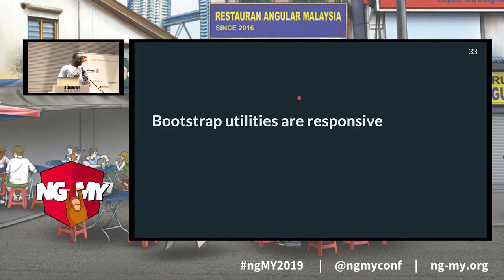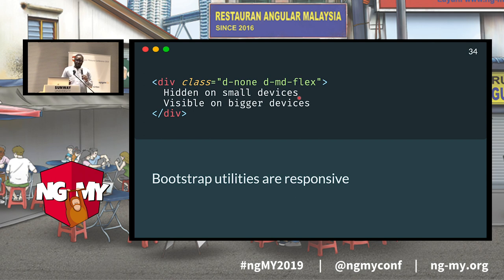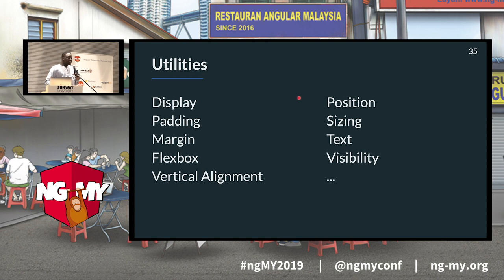Bootstrap utilities are also responsive, like the grid. For example, 'd-none' with no breakpoint hides the element on small devices (mobile first), but 'd-md-flex' makes it a flex container on larger devices. You just drop two classes instead of writing many media queries. You have utilities for display, padding, margin, flexbox, and more.